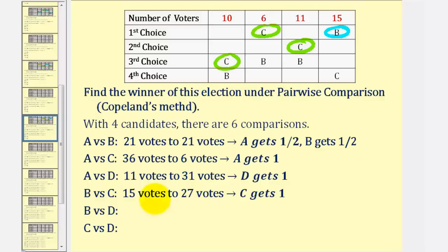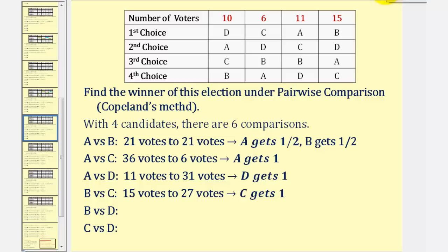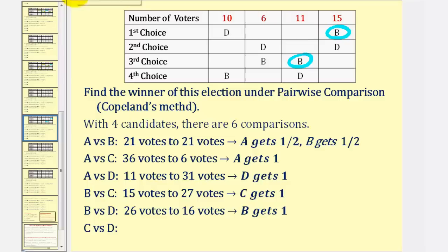For B versus D, we'll remove A and C from the table. B receives eleven plus fifteen, or twenty-six votes. And D receives ten plus six, or sixteen votes. B wins and B gets one point.